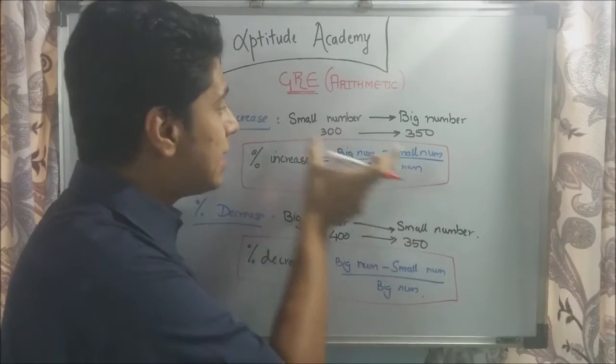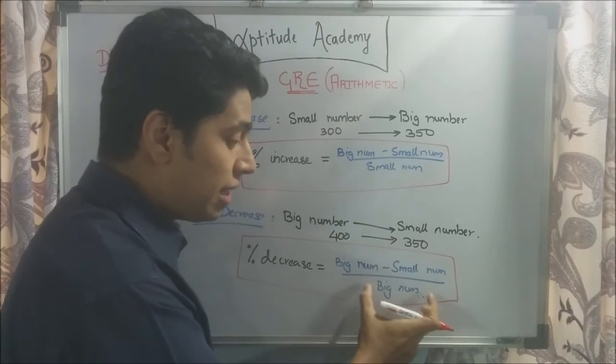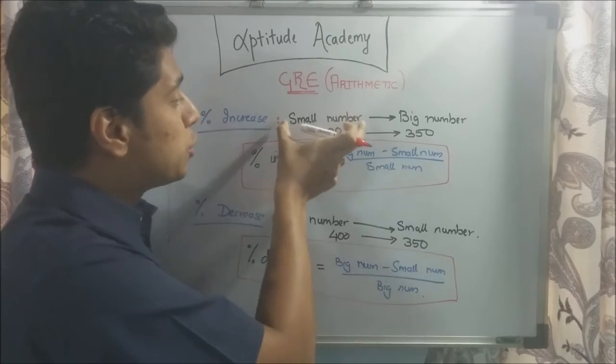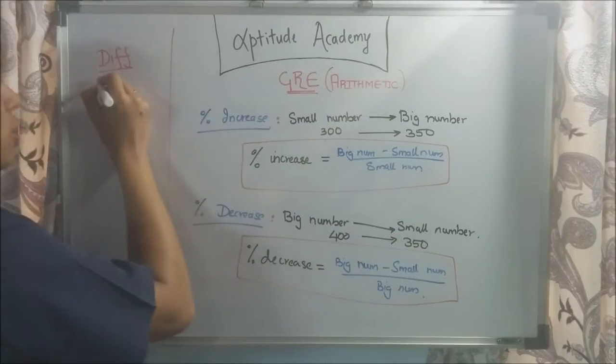Don't memorize it. This is the initial number. If you've noticed, here it goes from big to small. So, here in the denominator, it goes big. Here it goes from small to big. So, in the denominator, it goes to small. So, basically, this is your initial number.